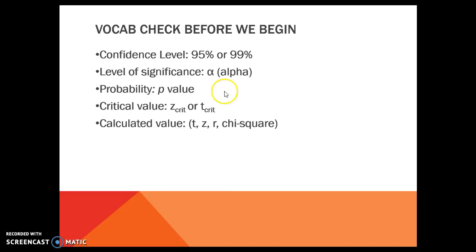Confidence level — how confident do you want to be? 95%? 99%? Significance level is based on how confident we are. An alpha of 0.05 matches a 95% confidence level. If we're 99% confident, then our level of significance is alpha of 0.01 — essentially allowing for 5% or 1% error.